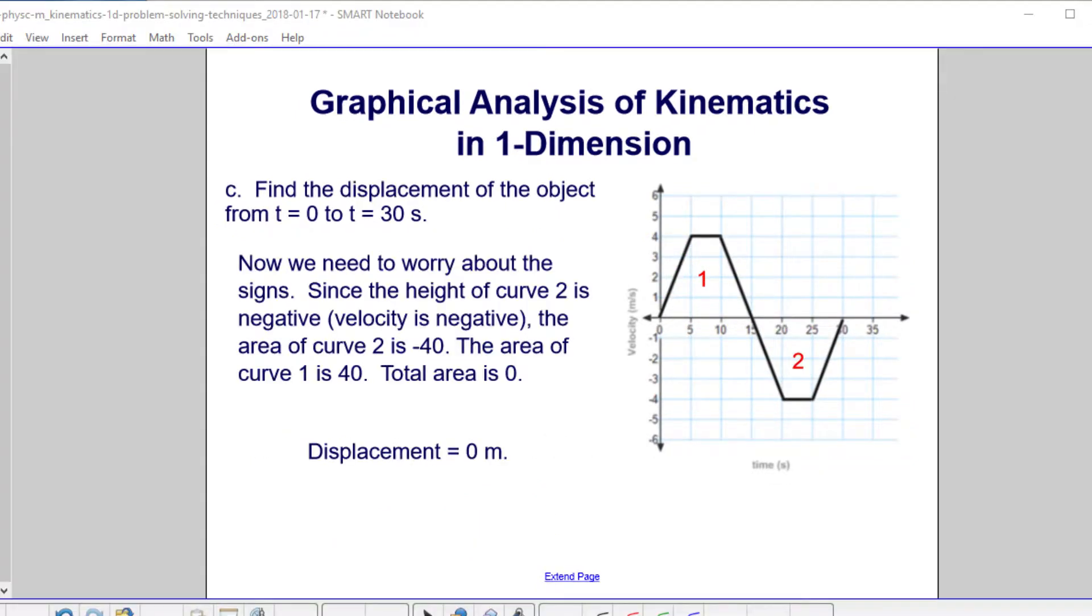Displacement, which is what we're finding now, is different than distance. There, it matters what direction we're going in. In this first case, since we had a positive velocity, we were going in the positive direction and we covered 40 meters.